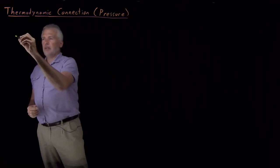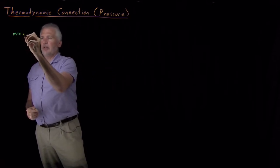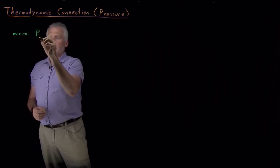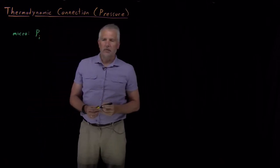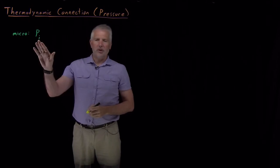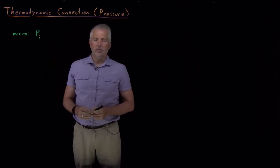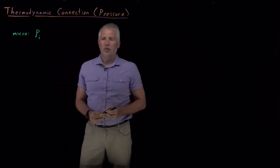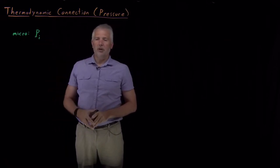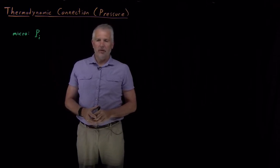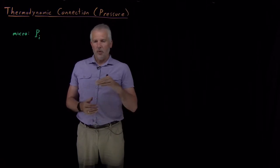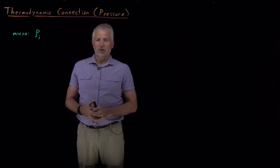For the pressure, we need to understand what it means to talk about the microscopic definition of the pressure. We're going to have both pressures and probabilities in this lecture, both of which use the variable p. So I use capital P for the pressure. We need to be able to talk about what is the pressure of an individual state of the system — a system in energy level one, two, or three might have different pressures from each other.